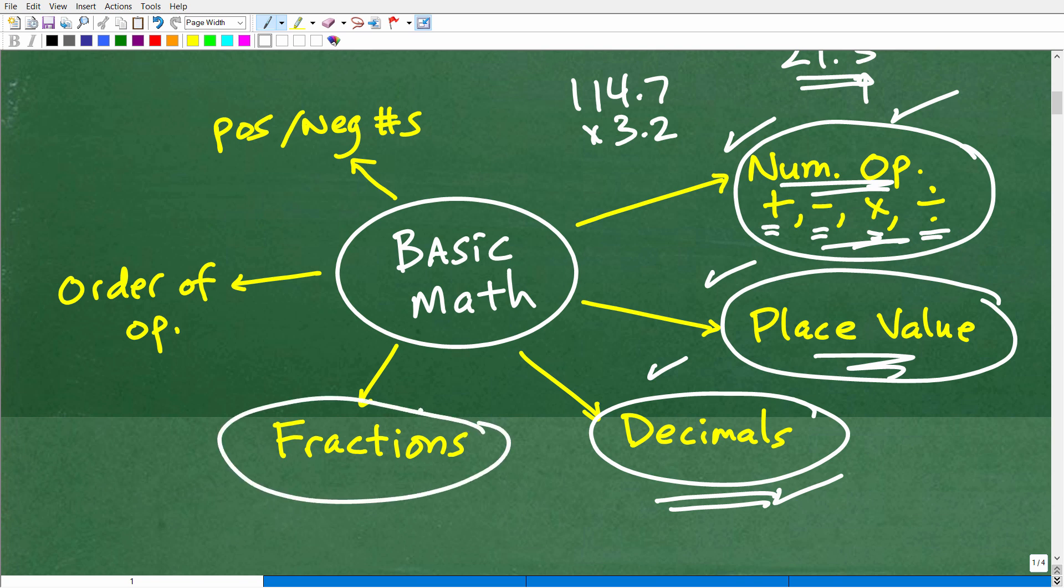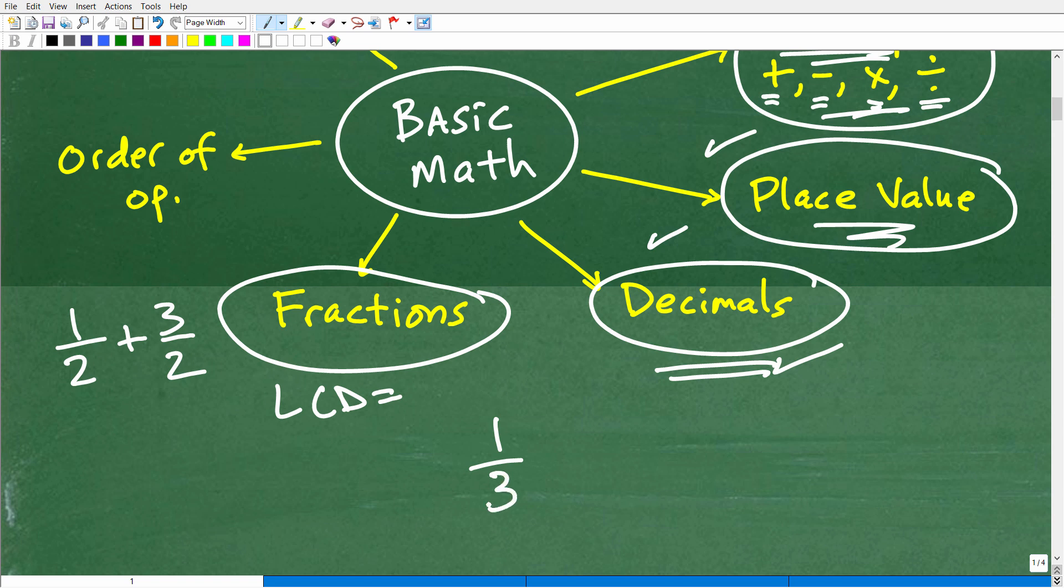That leads us to our next basic math topic, and that is fractions. Fractions, critical. Most people do not know fractions as well as they think. Of course, if I give them a simple problem, one half plus three halves, they can go, oh, I can do that. No problem at all. But if I give you a much more challenging fraction, then it gets more interesting. Most people can't tell me exactly how you find the LCD. If I give you one third plus two fifths, most of you could be like, oh, the LCD is 15. And you'd be correct. But how about 32 and 504? If those were the denominators, this would be much more challenging to find the LCD.